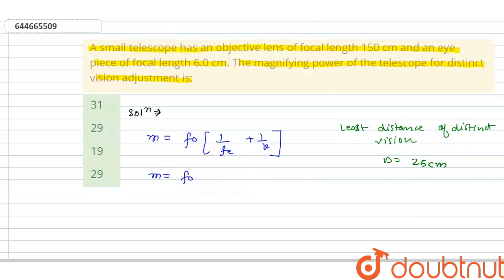So, F0 is equal to 1 upon Fe plus 1 upon V. Now, we will put the values. So, M is equal